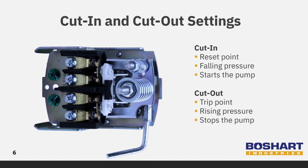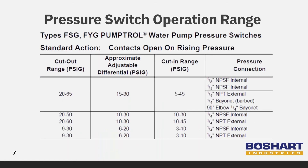Turn the nut on the large spring clockwise to raise both the cut-in and cut-out pressure. Turn the nut counterclockwise to lower both the cut-in and cut-out pressure settings. For accuracy and to optimize the life of the switch, the cut-in and cut-out set points should be in the middle of the operating pressure range. Following the presentation, this technical sheet outlining the minimum and maximum cut-in and cut-out ranges will be available for download for your reference.